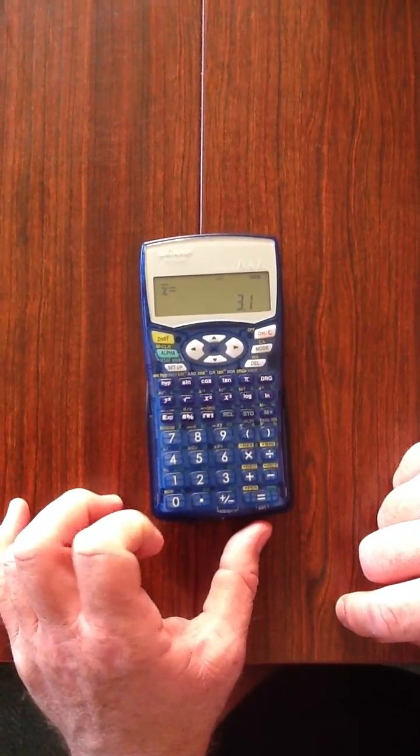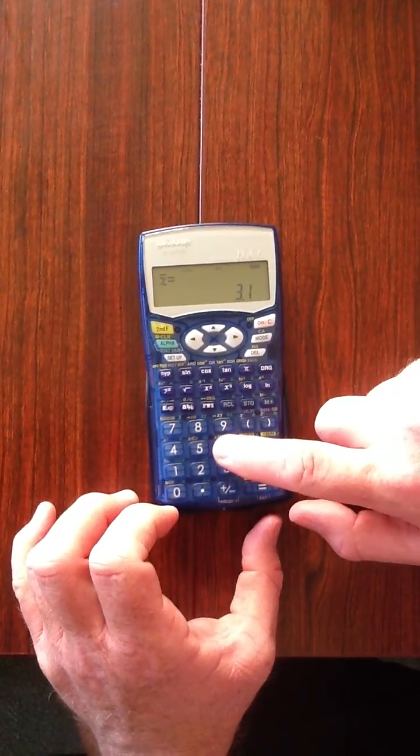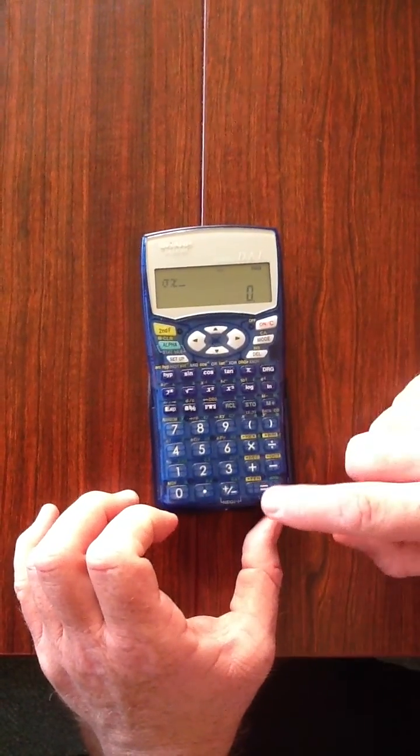To calculate the population standard deviation, again alpha and sigma X.